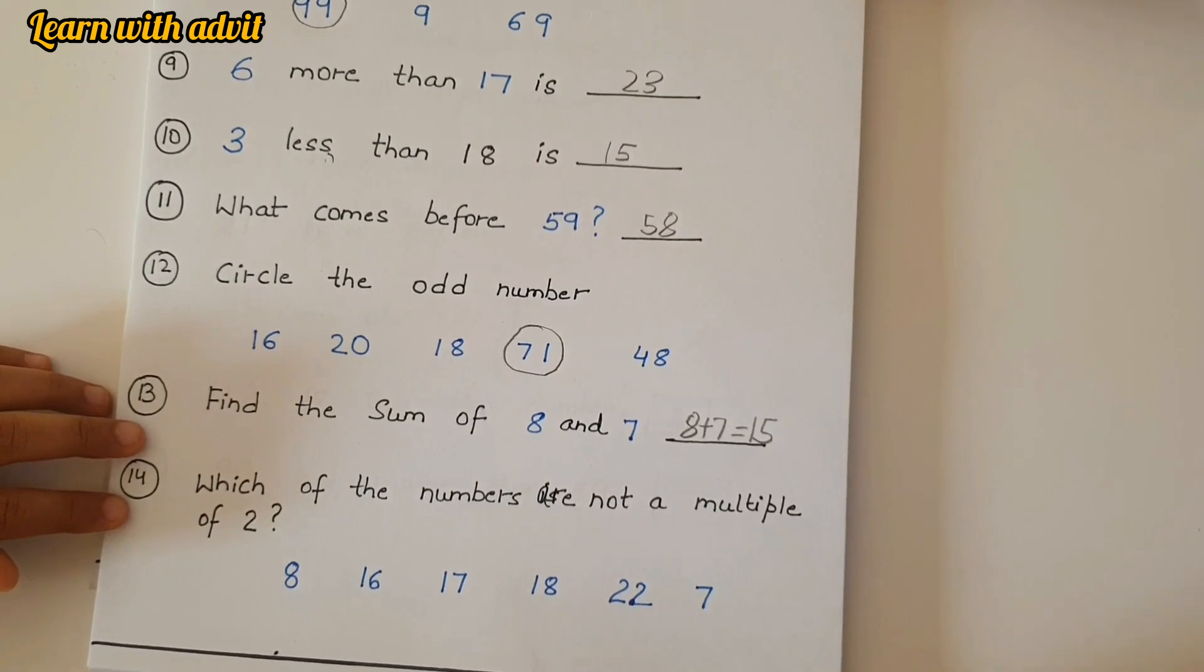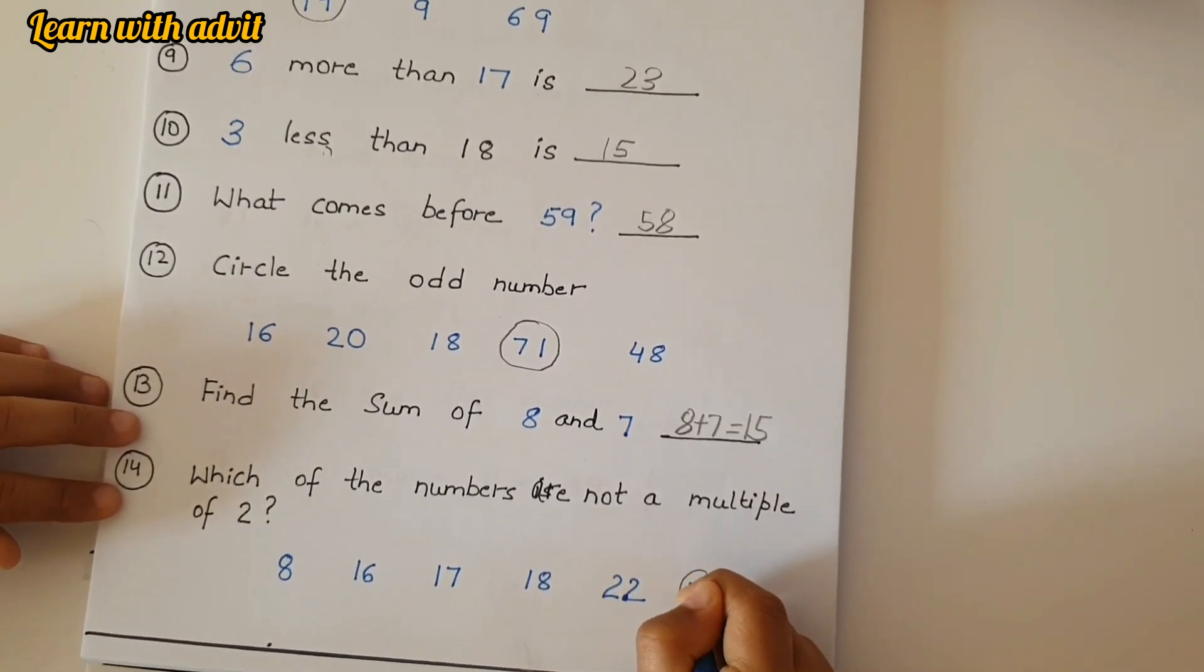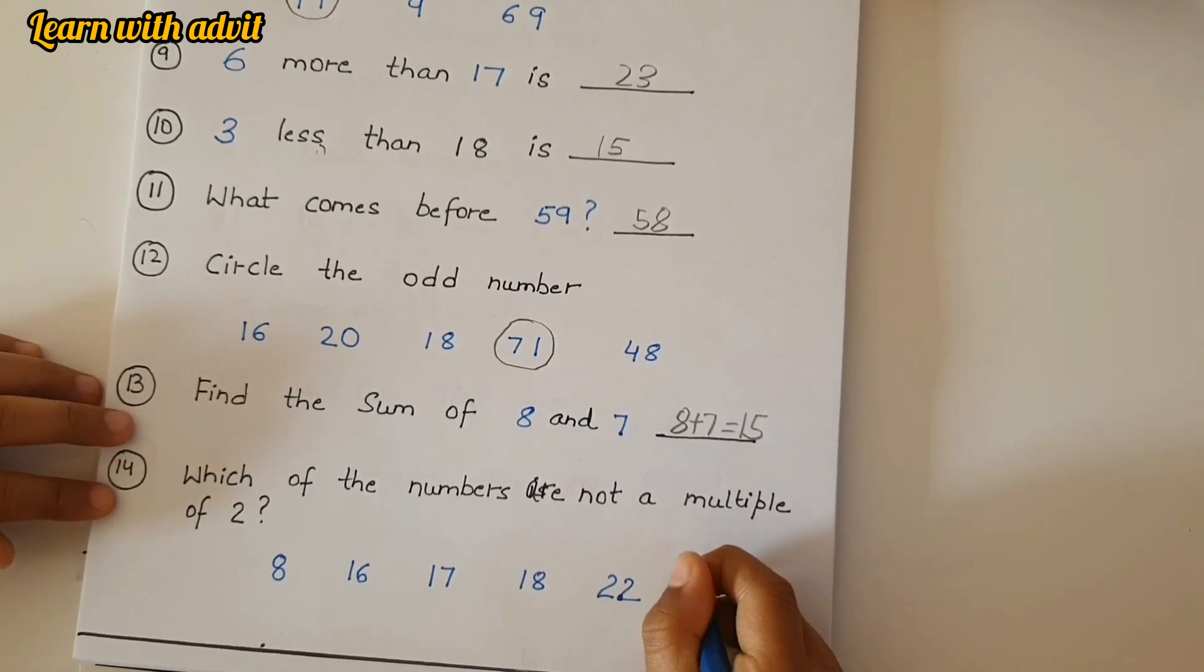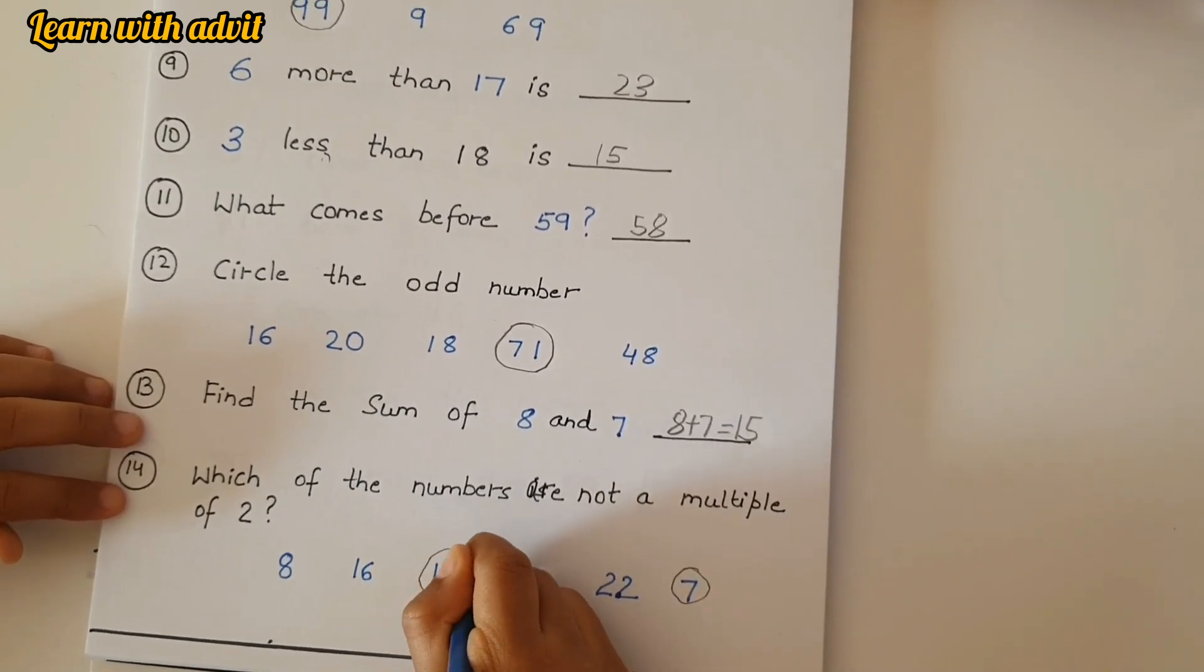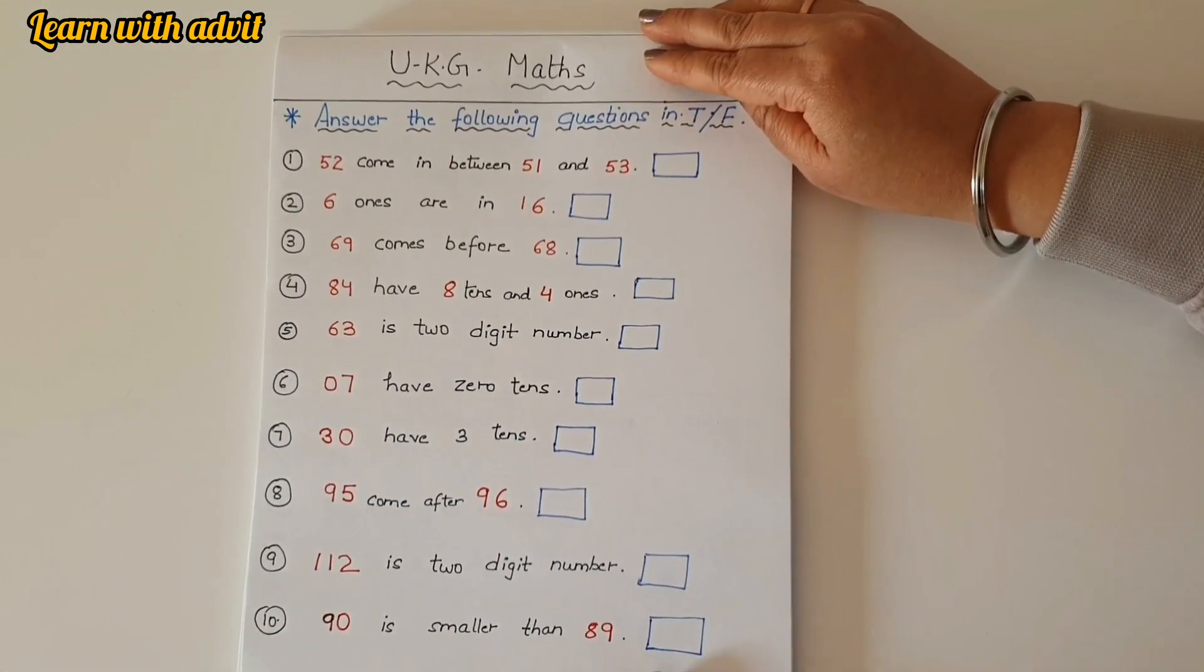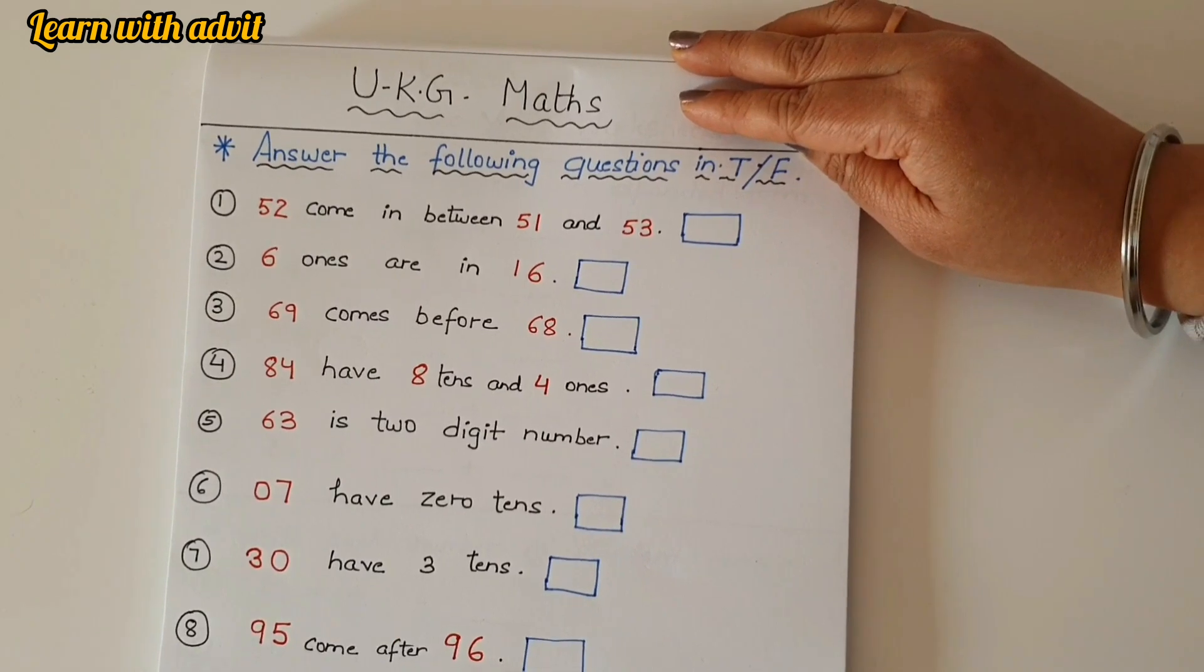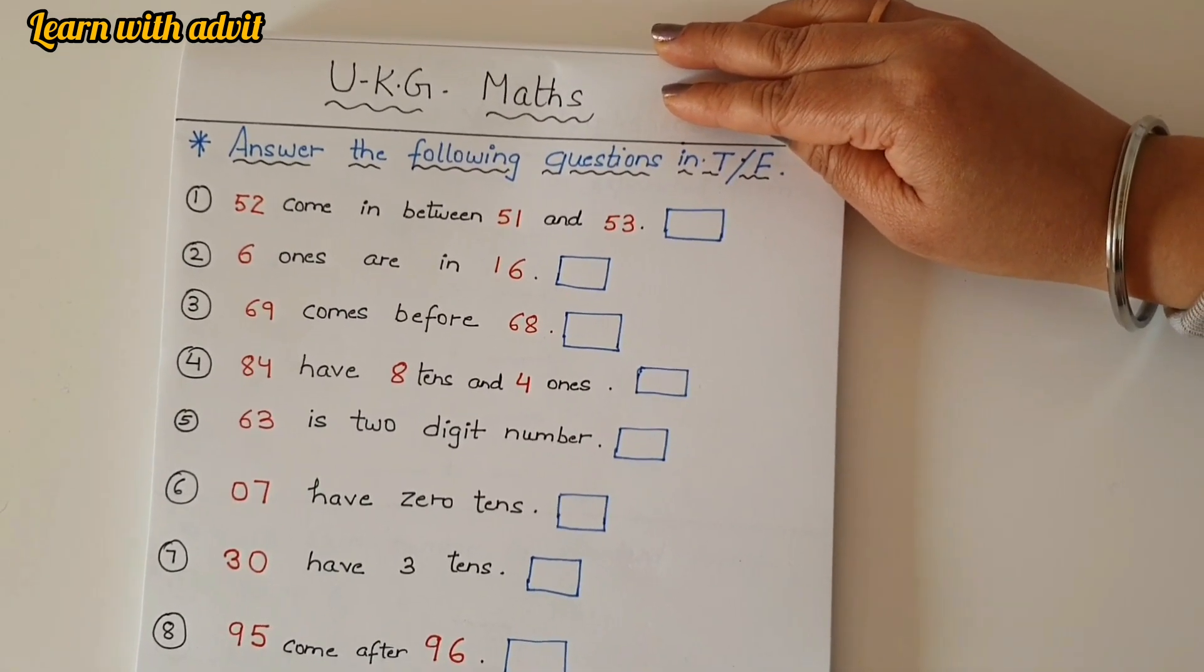Find the sum of eight and seven. Eight plus seven equals 15. Which of the seven numbers are not a multiple of two? You have to circle it. Seven, yeah, and 17. Good.